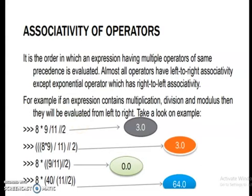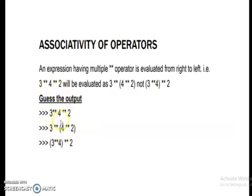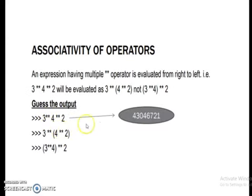Now let us check how the exponent operator works. See here: 3 double star 4 double star 2. The double star is the power operator. When you write an expression like this, instead of doing 3 to the power 4 first, it will do 4 double star 2 first. That is 4 squared, which gives 16. Then it will do 3 double star 16, that is 3 to the power 16, and you will get this output.